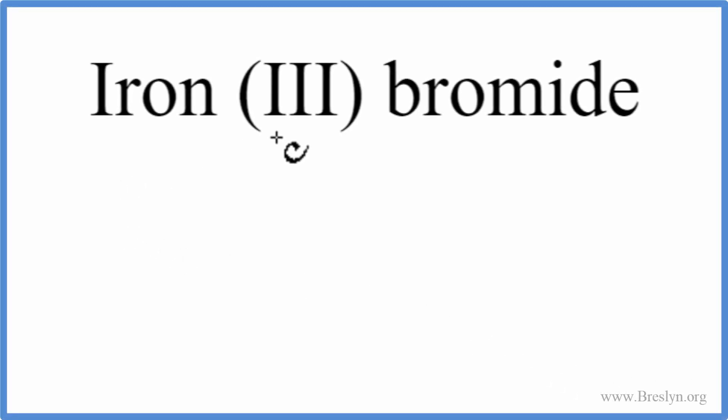To write the formula for iron (III) bromide, we go to the periodic table and look up iron. That has an element symbol of Fe. We then look up bromide. We're looking for bromine. That's Br.